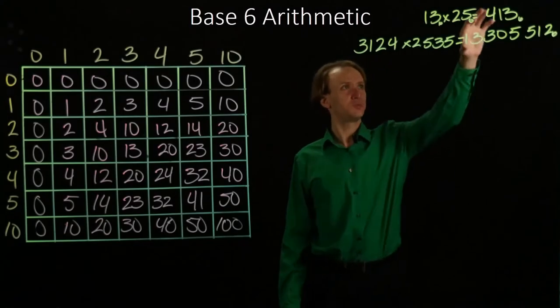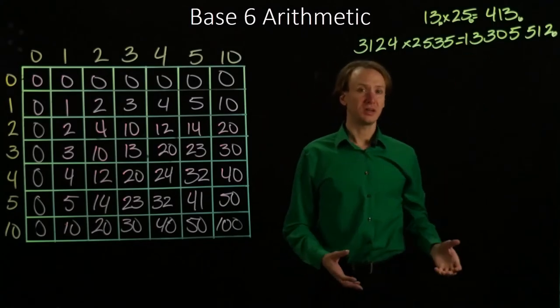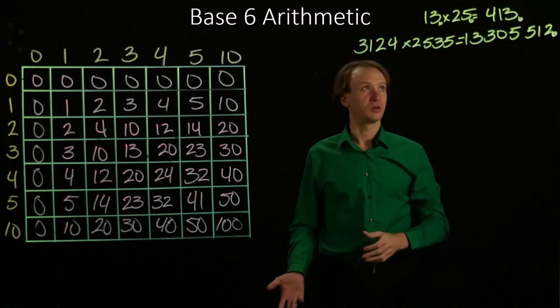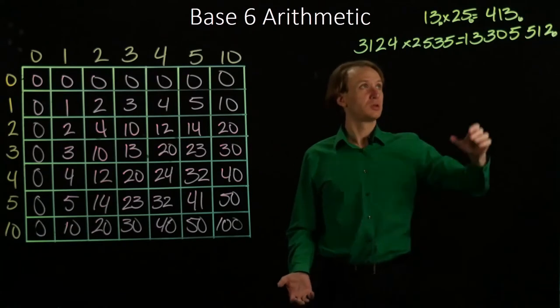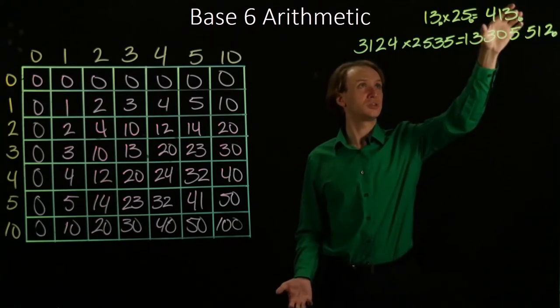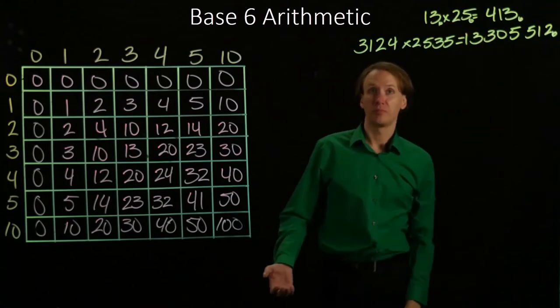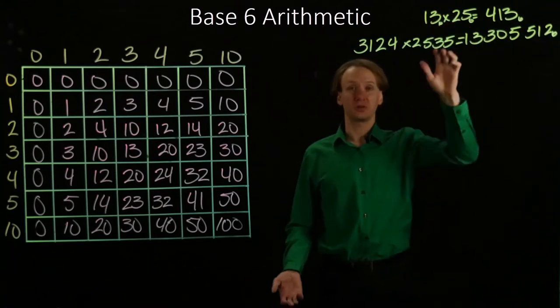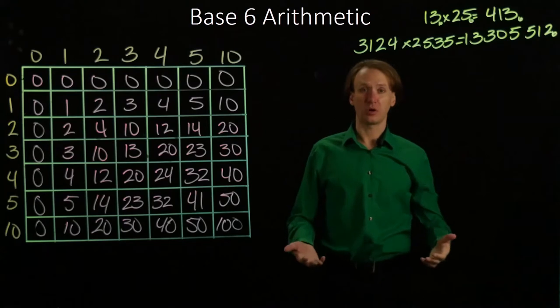Last time, we computed these two products. So this time, we're going to walk backwards through those. We're going to see what happens when you divide 413 by 13, for example. We expect we should get 25 out, but we'll see how that works.